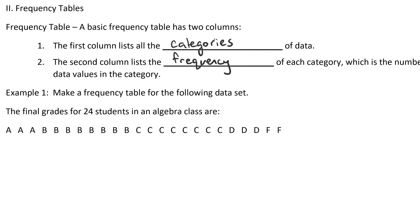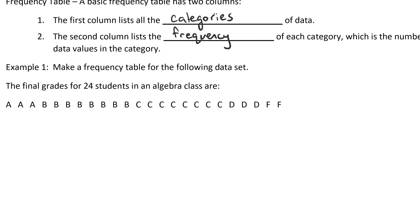So for example, there's 24 students in an algebra class and here are all of their grades. If we set up just a basic frequency table, then the first column would just be the grade. So here we have all the grades A through F: A, B, C, D, F.